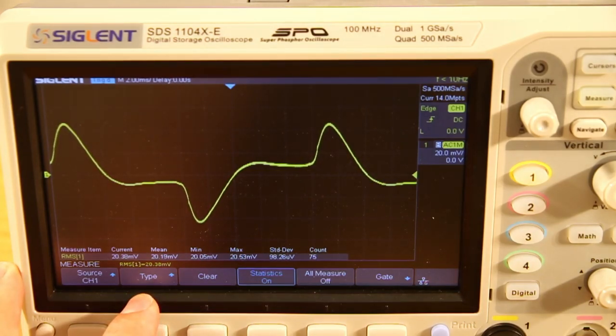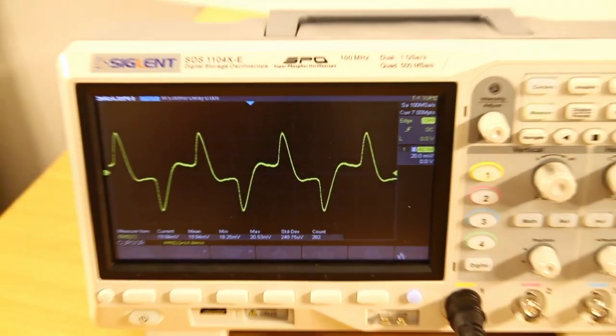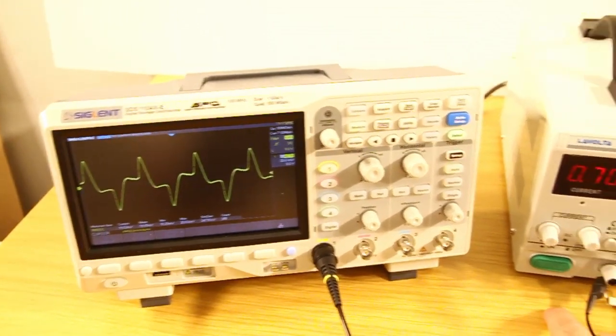So here we go. At 3.3 volts and 700 milliamps drawn it produces a noise of 20 millivolts. This is the best I could do and really I didn't have to worry so much because the ripple is so big you can't miss it. Look at that, if I turn off the power supply, everything's gone.